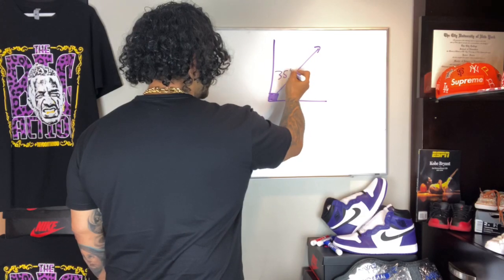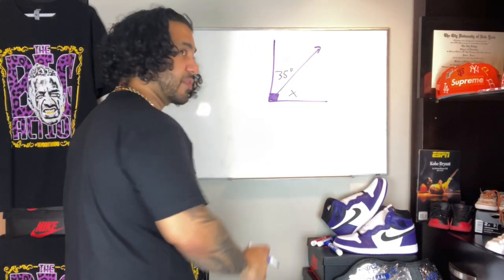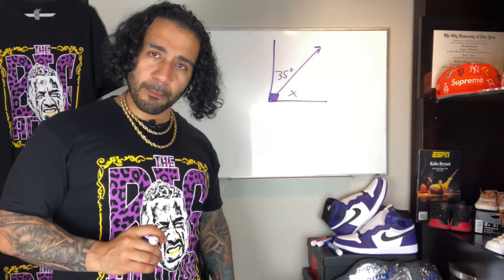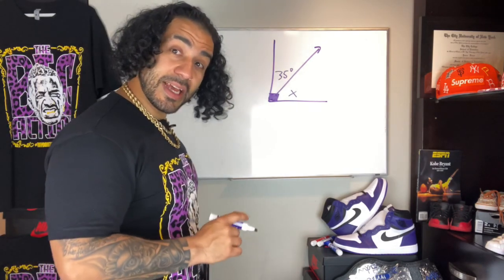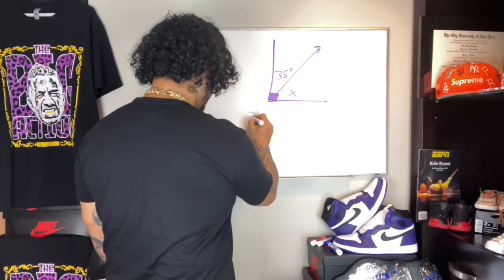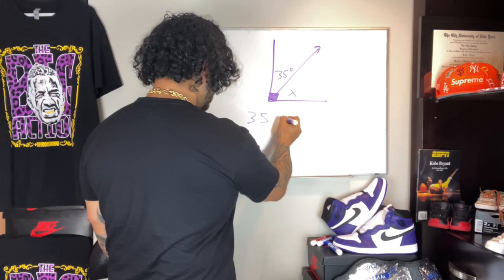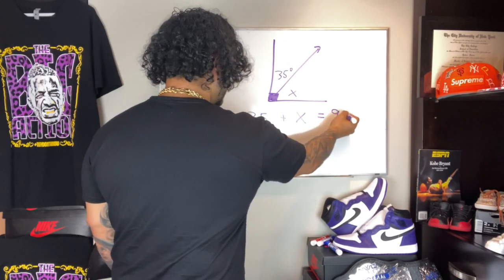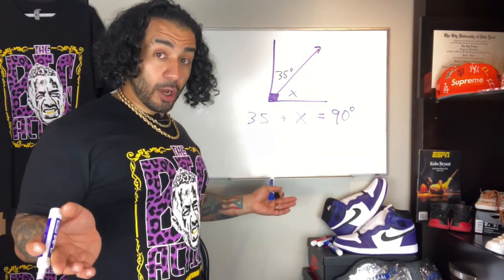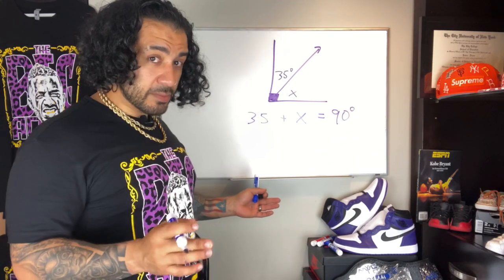Now let's imagine you have 35 degrees here, but over here you have X. What does X mean? It doesn't mean where the treasure is — that is a variable, and a variable means something we don't know yet. So how are we gonna figure out the missing angle? We set up an equation — this is the algebra. We say 35 plus X equals 90 degrees.